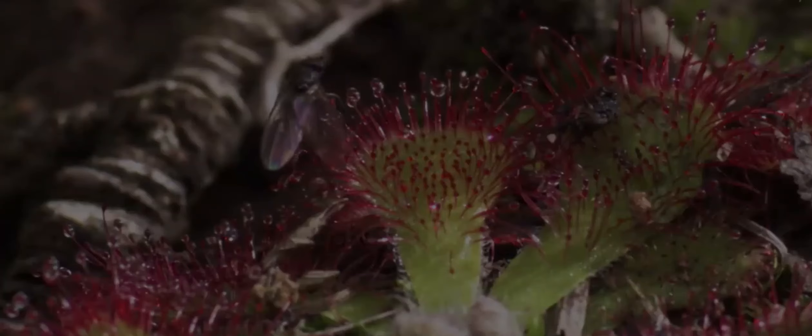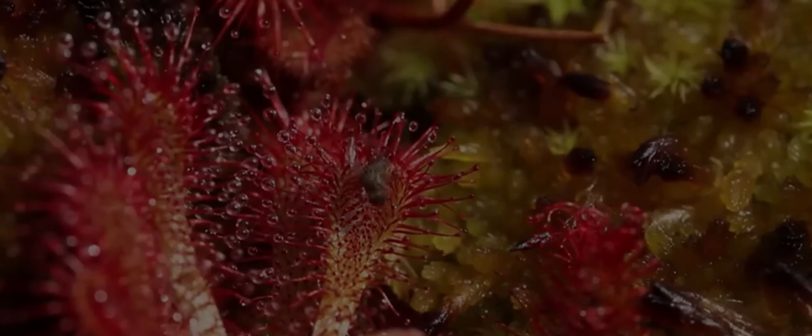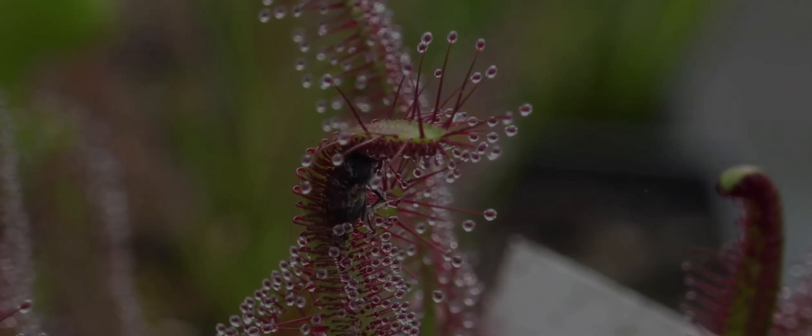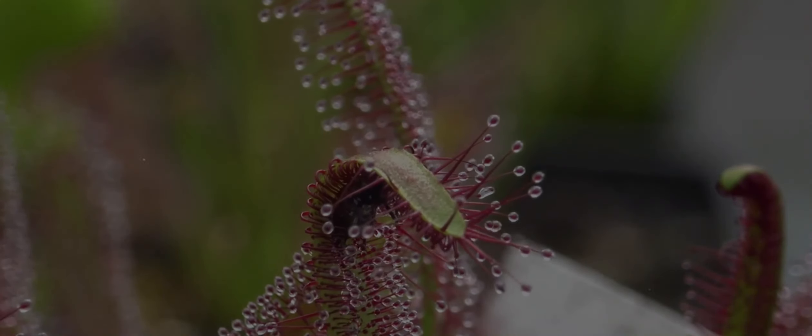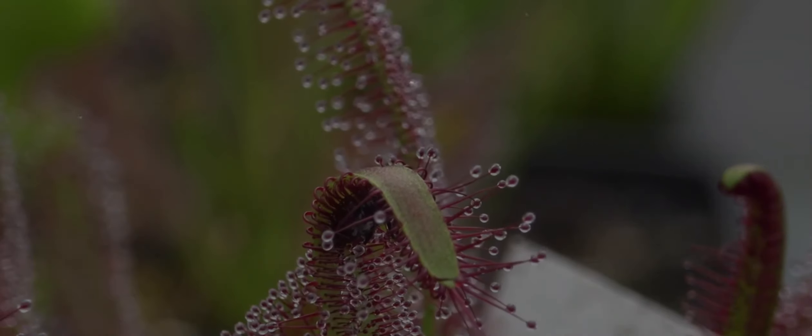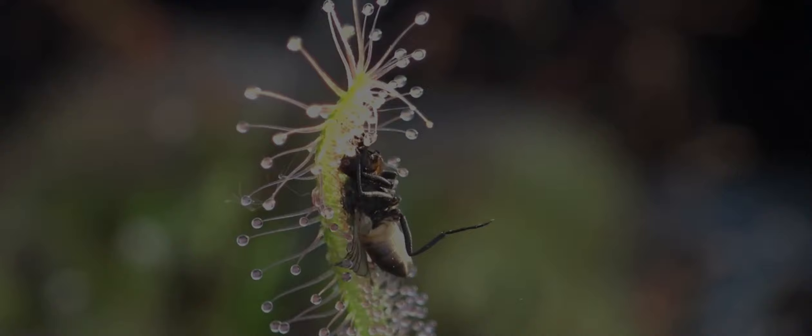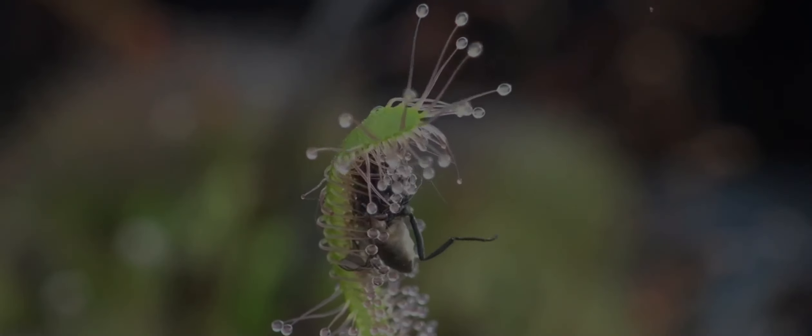It is a fascinating carnivorous plant known for its glistening, dewy leaves that trap insects. Once an insect lands and gets stuck in the mucilage, the Sundew's true deadliness unfolds. The tentacles nearby slowly bend inwards, smothering and slowly digesting the prey with digestive enzymes.